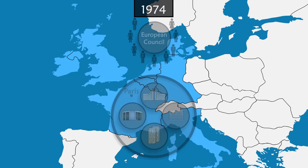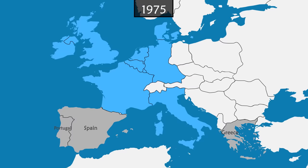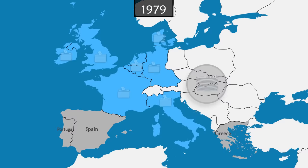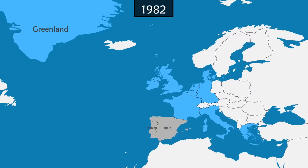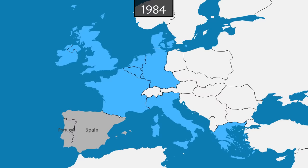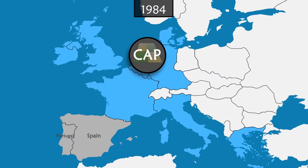South of the continent, after the end of dictatorships in Portugal, Greece and Spain, the three countries request membership of the community. In 1979, for the first time, members of the European Parliament are elected by universal suffrage. In 1981, Greece joins the community. The following year, Greenland, which receives more autonomy from Denmark, chooses to leave the community after a referendum. In 1984, the United Kingdom under Margaret Thatcher says it does not benefit enough from the Common Agricultural Policy, which then represented 80% of EU spending. The country negotiates to obtain a reduction in its contribution to the community's budget.